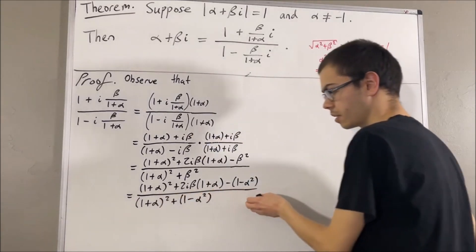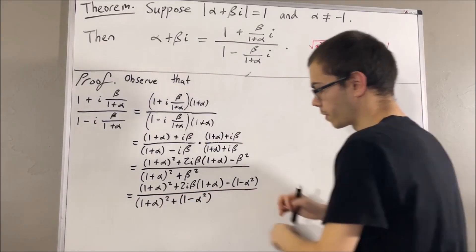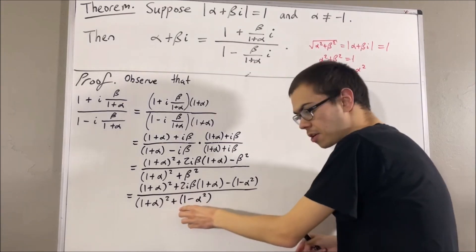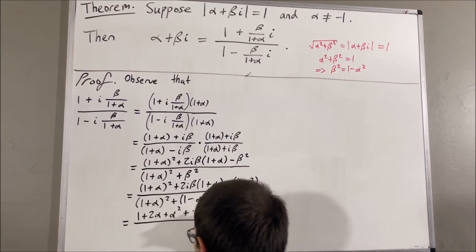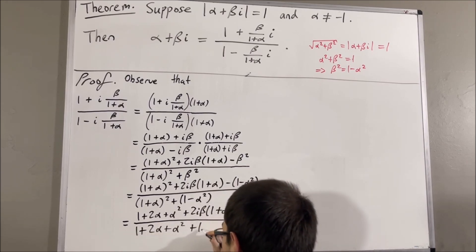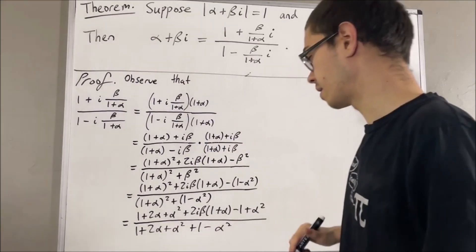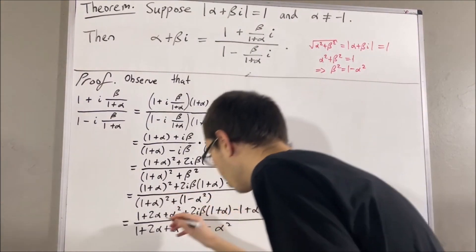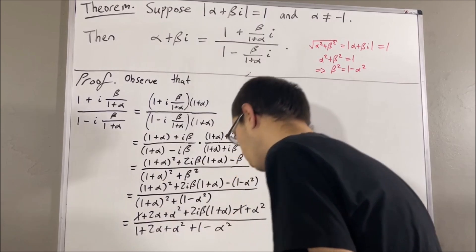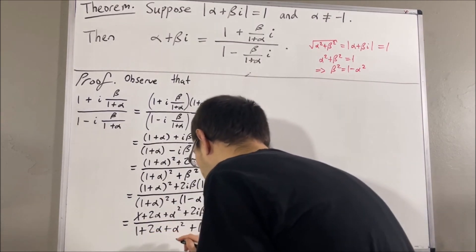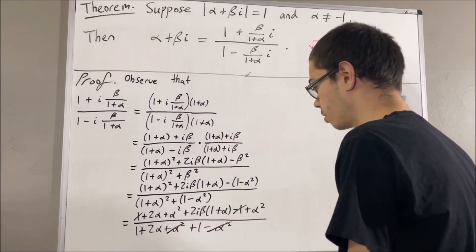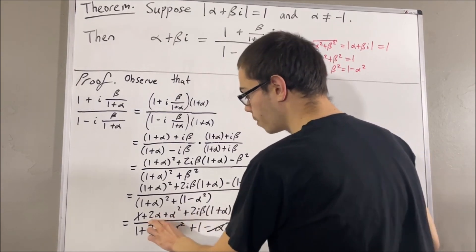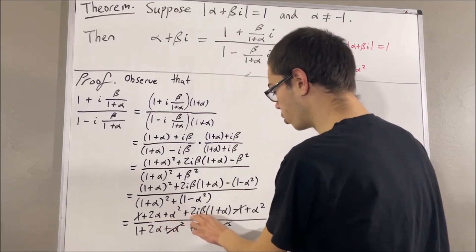If we do that, we get this. And, next, let's just expand out 1 plus alpha squared. All right, let's distribute the minus sign across. And so, we see that some things are going to cancel out and other things are going to combine together. In the numerator, notice the 1 and the minus 1 will cancel out. And, in the denominator, the plus alpha squared and the minus alpha squared will cancel out. Now, in the numerator, we see that we're doing alpha squared plus alpha squared, so we're going to be left with 2 alpha plus 2 alpha squared plus 2i beta times 1 plus alpha.